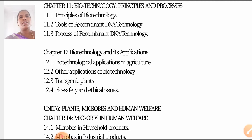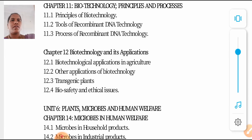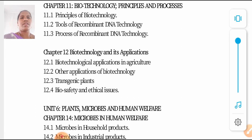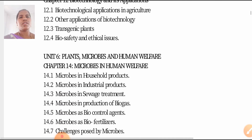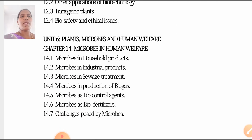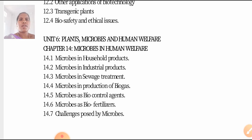Transgenic plants, biosafety and ethical issues. Unit 6 is Plants, Microbes and Human Welfare. Chapter 14: Microbes in Human Welfare — microbes in household products, microbes in industrial products, microbes in sewage treatment, microbes in production of biogas, microbes as biocontrol agents, microbes as bio fertilizers, and challenges posed by microbes.